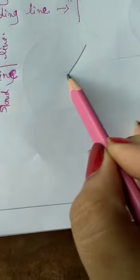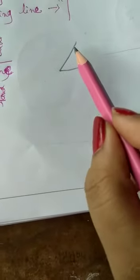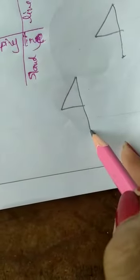First a right slanting line. From the end of the right slanting line start a sleeping line. And then a standing line. Join both lines with a standing line. It makes number 4.